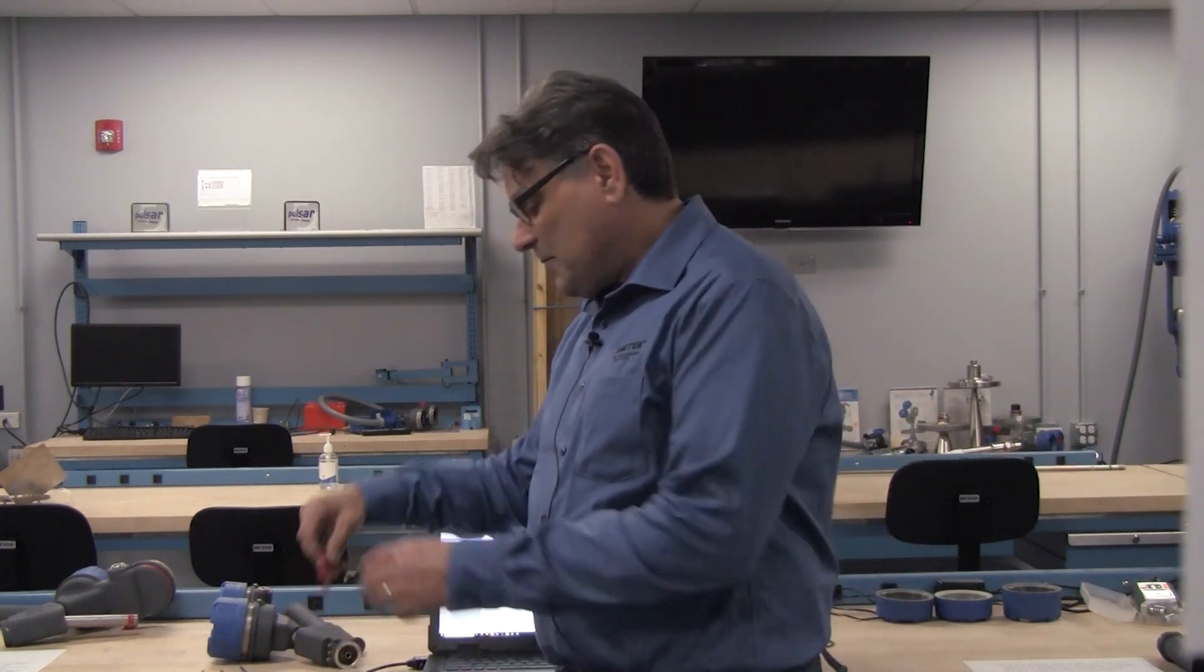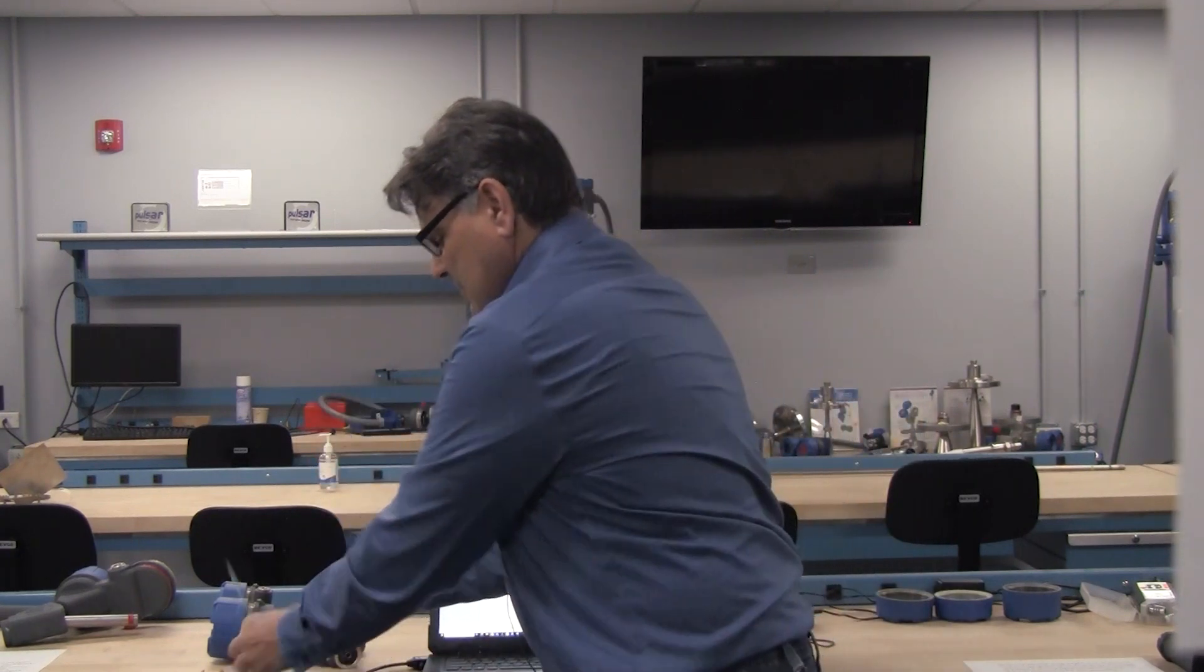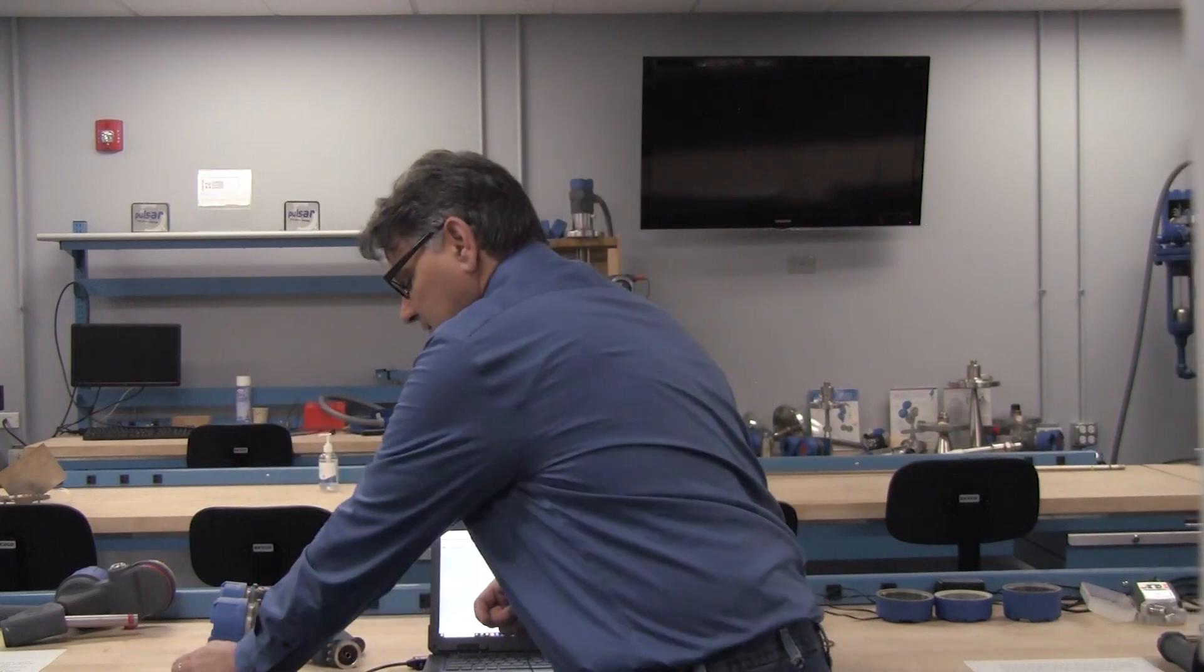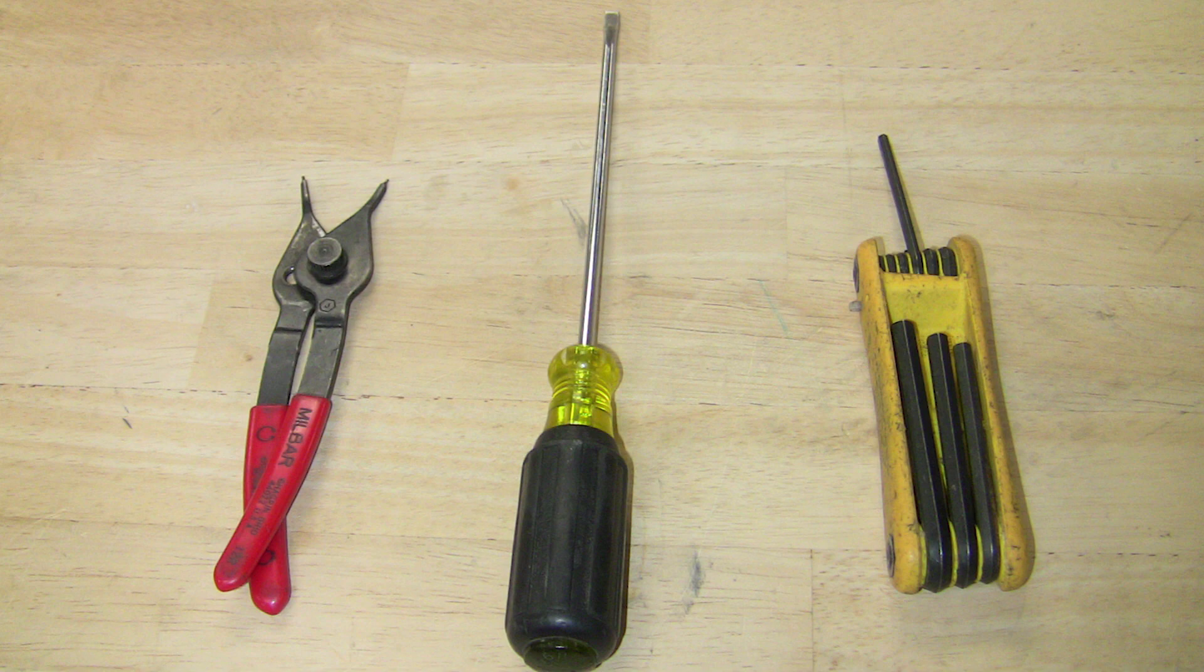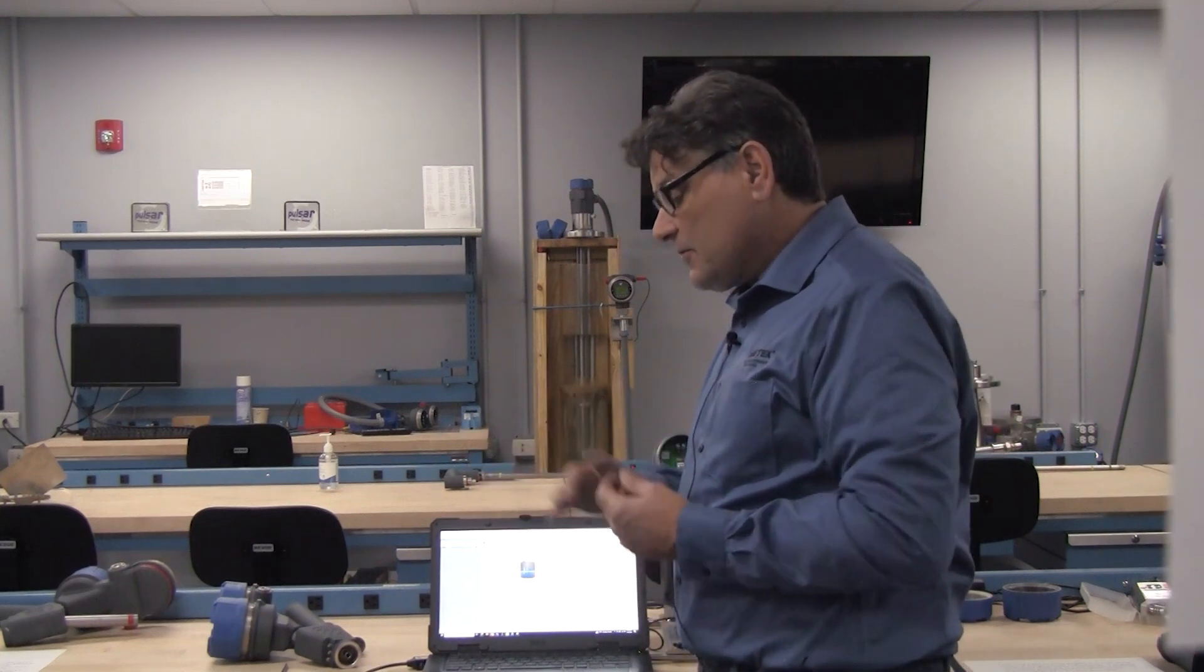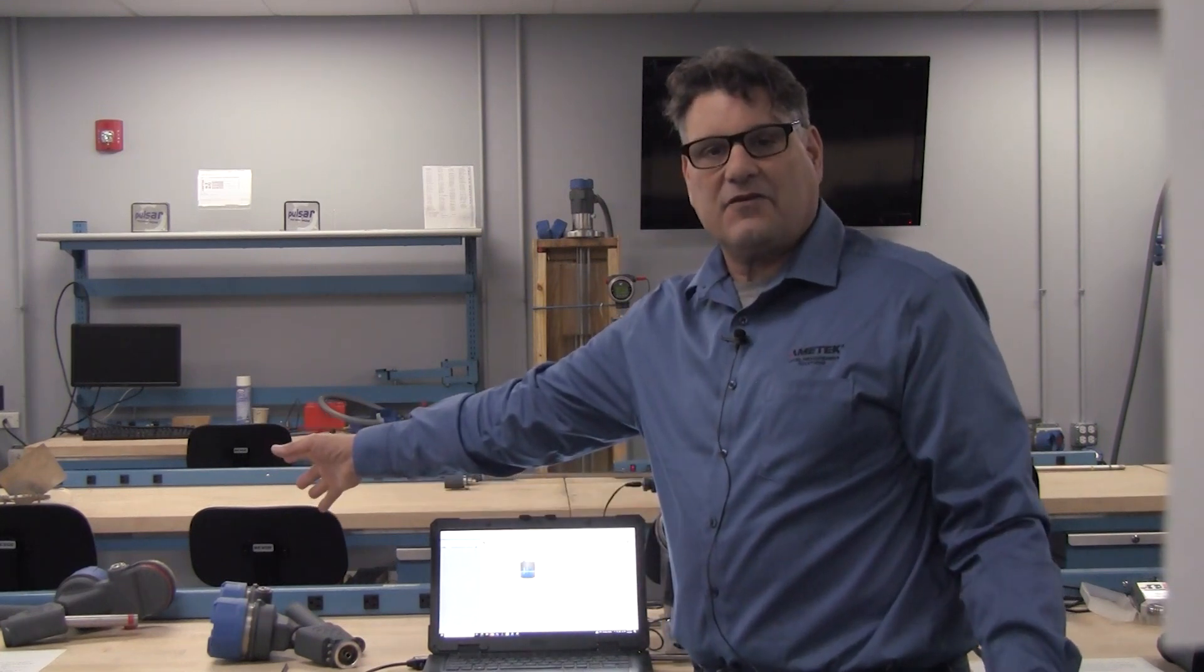The tools you'll need for the installation are snap ring pliers, a flat blade screwdriver, an eighth inch Allen wrench, and a laptop loaded with PACTware, a 250 ohm resistor, and a HART modem. Those are optional if you wish to use the laptop to set it up. You can also do the setup from the display of the transmitter.